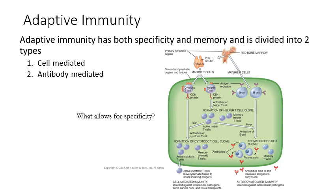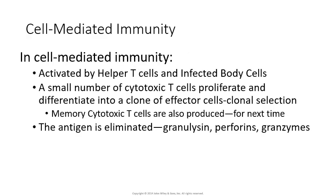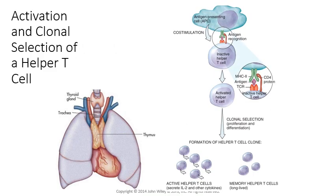Once the helper T cell gets activated by an antigen presenting cell, it causes the proliferation of clones capable of recognizing that particular antigen. One type of clone produced is cytotoxic T cells, which are capable of destroying body cells that have been infected by intracellular pathogens — usually viruses, but also intracellular bacteria and protozoa. Here's a picture showing part of that T cell cascade: the thymus gland sits just above the heart, and the MHC class 2 protein presents the antigen to an inactive helper T cell, activating it.